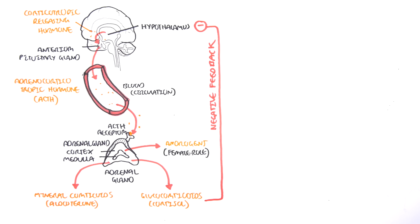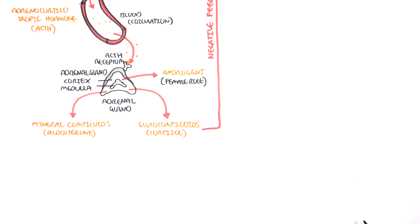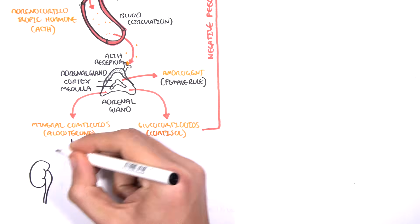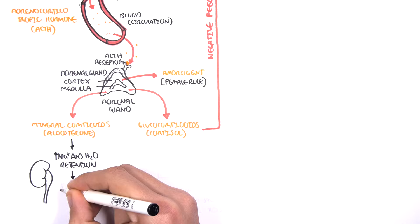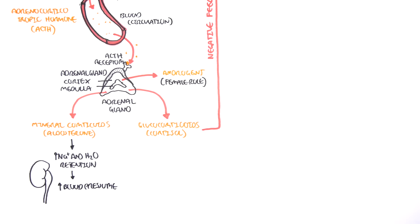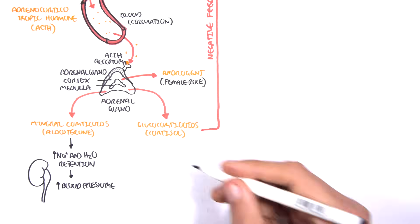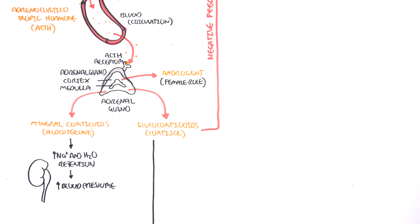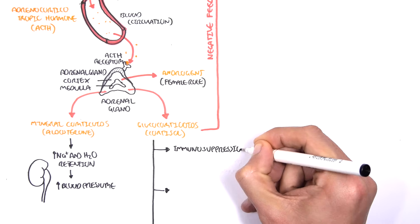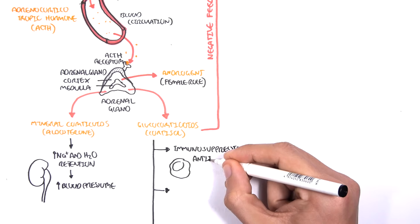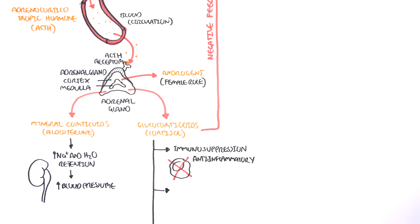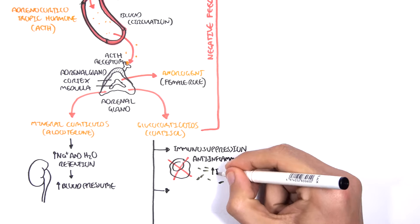So what do these adrenal cortex hormones actually do? Mineralocorticoids, mainly aldosterone, function to increase sodium and water retention in the body. They primarily work on the kidneys, retaining sodium and water, resulting in an increase in blood pressure. Glucocorticoids such as cortisol do many things. The effects are usually long term and are often referred to as the stress response. The effects of cortisol include immunosuppression, and because it is immunosuppression, it is also anti-inflammatory. This also means that infection risk increases.